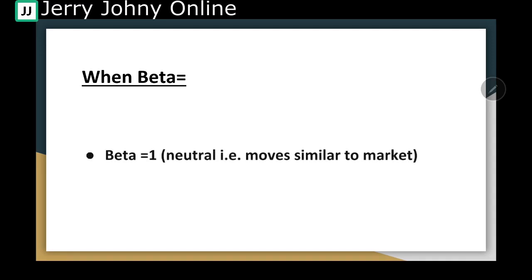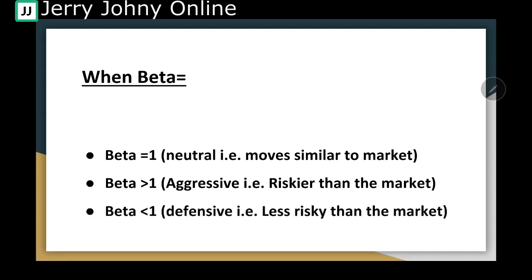Beta can be 1, it can be greater than 1, and it can be less than 1. When beta is 1, it moves similar to the market. If the market increases 15 percent, the stock increases 15 percent. If beta is greater than 1, that means the stock is aggressive, riskier than the market.